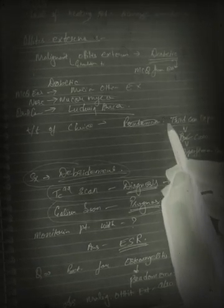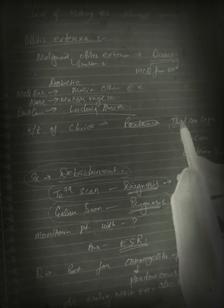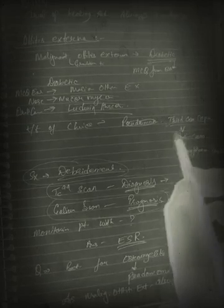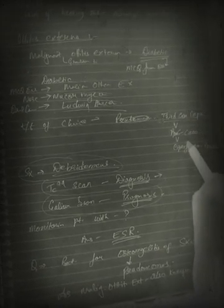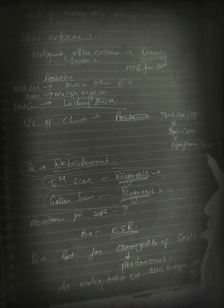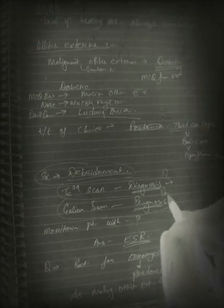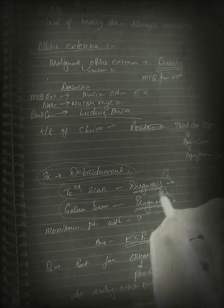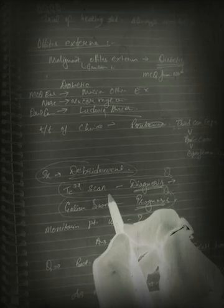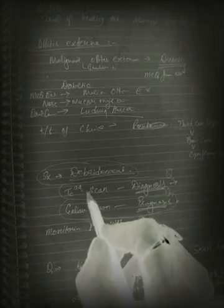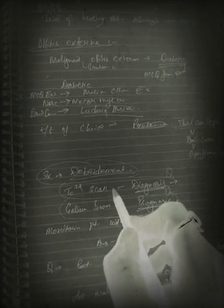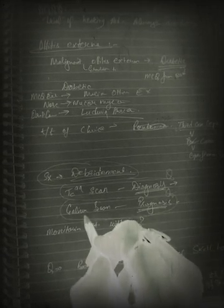Treatment of choice for malignant otitis externa: first try third-generation cephalosporin; if it doesn't respond, try ciprofloxacin, then penicillin-group drugs. The surgery of choice is debridement. For diagnosis, we do a technetium-99 scan. For prognosis, we do a gallium scan.